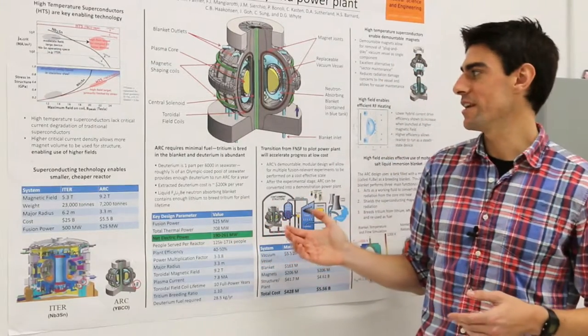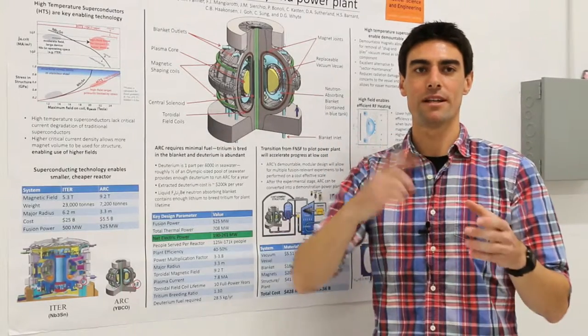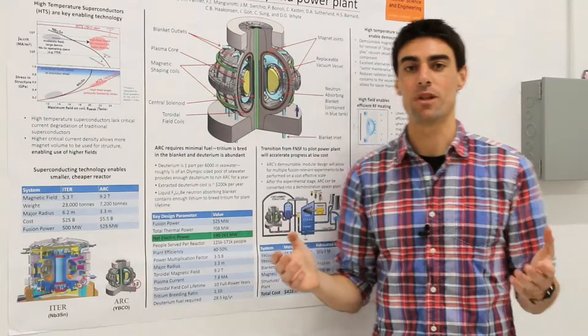ARC is a compact tokamak that uses high fields. A tokamak is a donut-shaped device that uses magnetic fields to confine a fusion plasma.